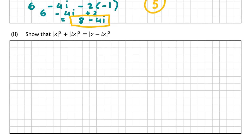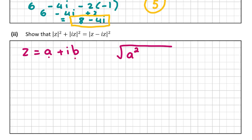The modulus of a complex number: if z equals a plus ib where a and b are constants, the modulus is the square root of a squared plus b squared. Since the modulus is squared in this question, we don't need to worry about the square root — it simplifies to just a squared plus b squared.